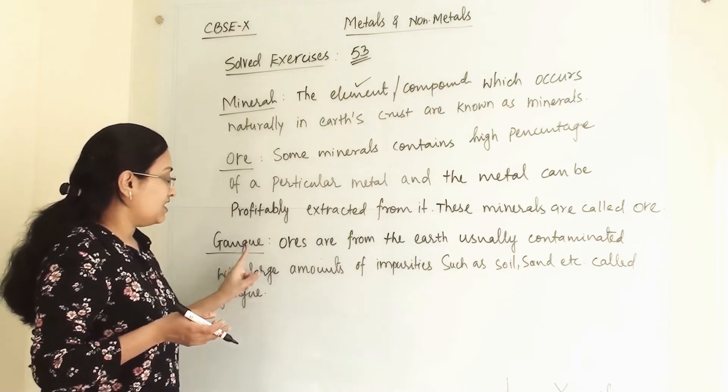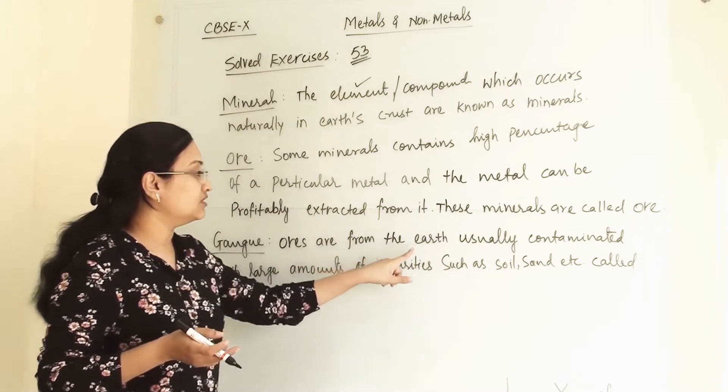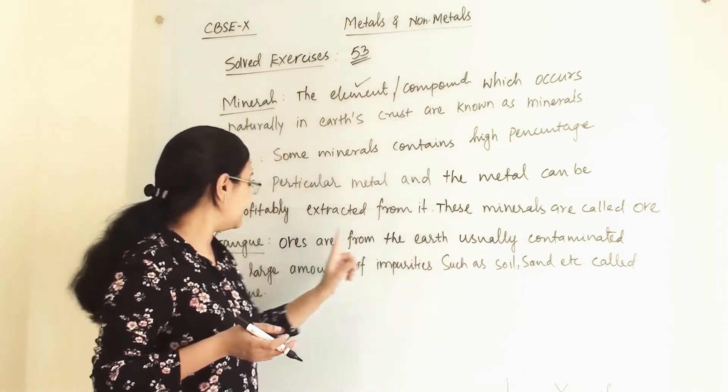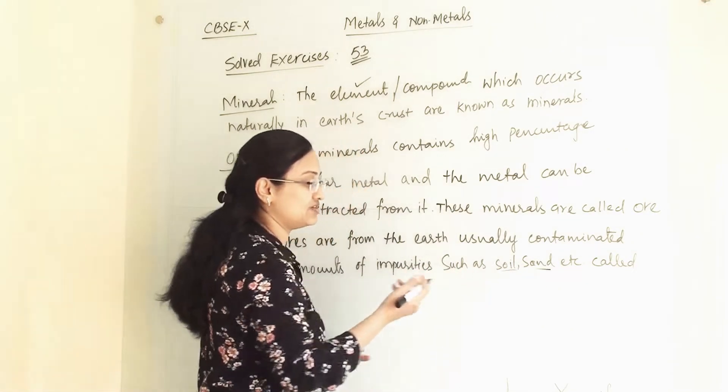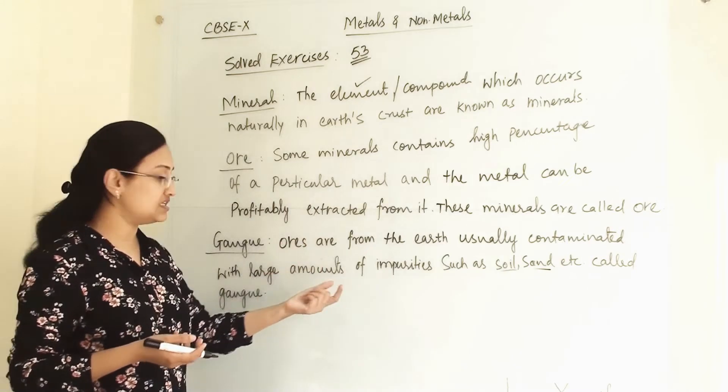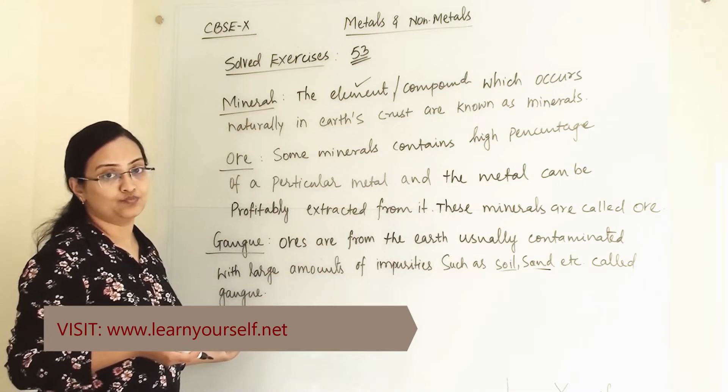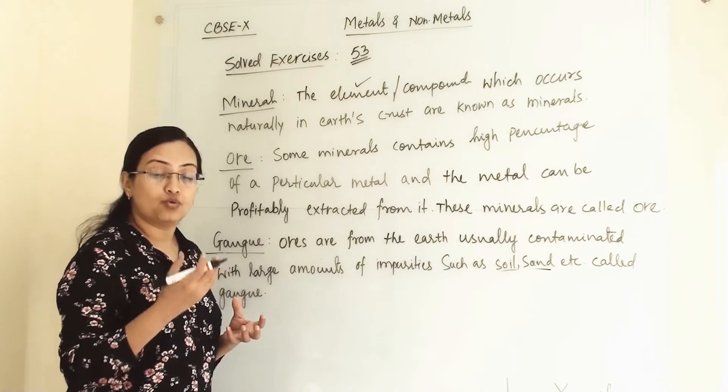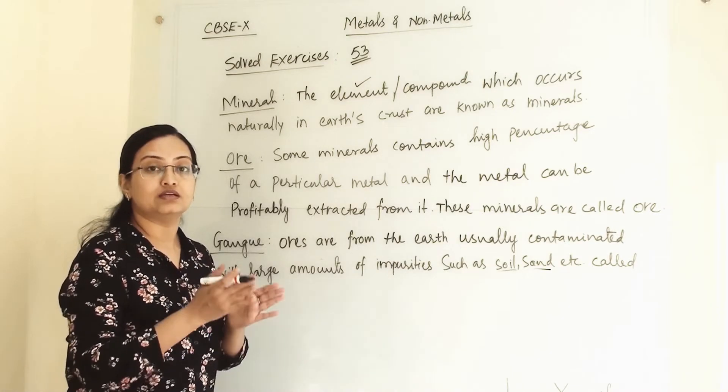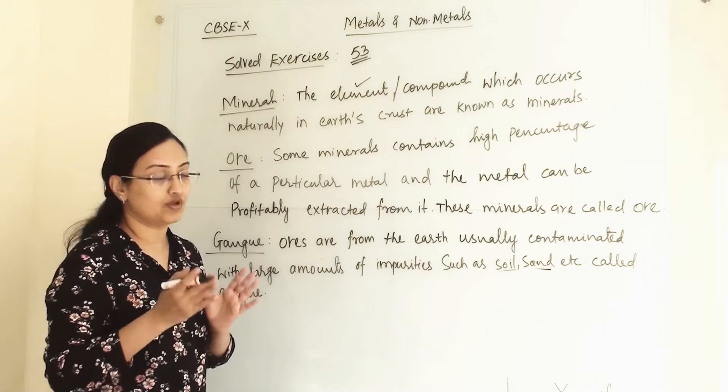Now gangue: When ores are from earth's crust, they are usually contaminated with large amounts of impurities such as soil, sand, etc. These impurities are called gangue. When we are extracting metal from its ore, then we have to separate the metal from its gangue. What is gangue?